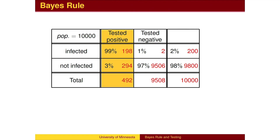Altogether, there are 492 individuals that tested positive. We now want to know what percent of the population that tested positive actually has the disease. Of the 492 that tested positive, 198 have dragon pox, which is 40.2% of those that tested positive. Even though you tested positive, it is still more likely that you are healthy.